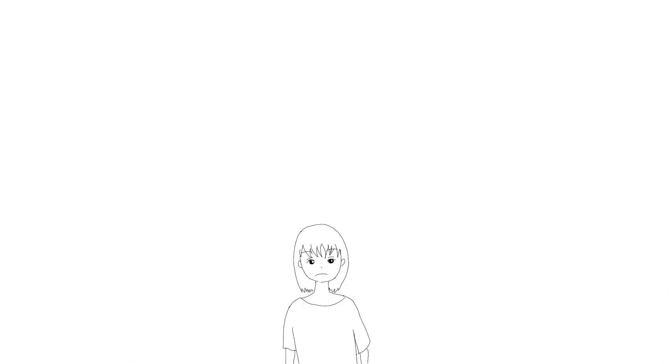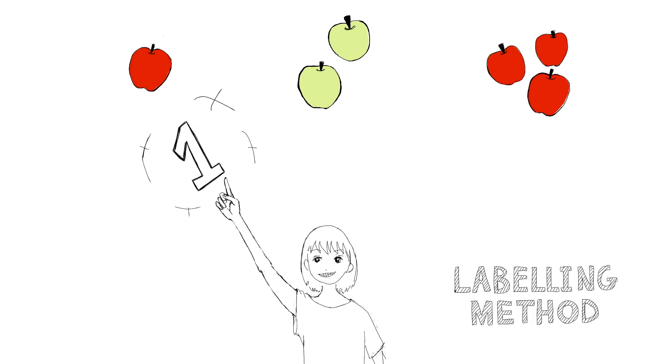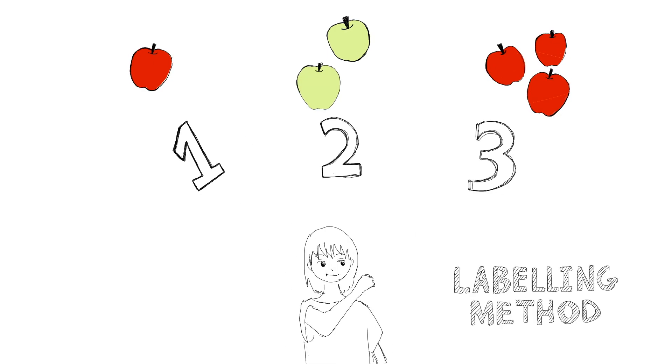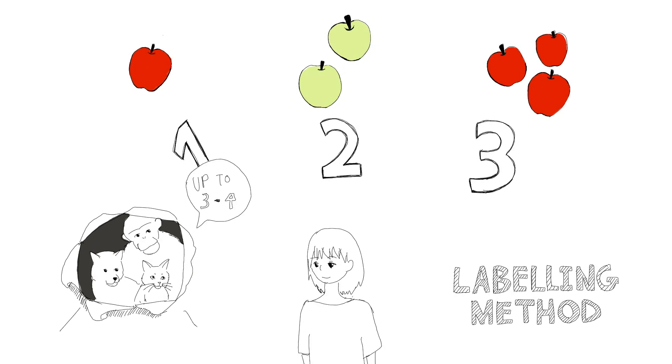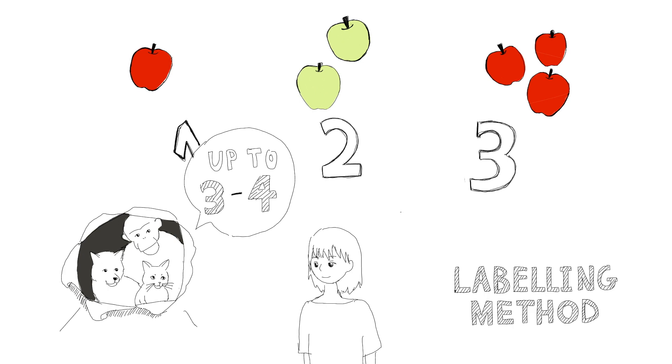We humans often count numbers by labeling each amount using numerals such as 0, 1, 2, and so forth. Some animals are able to learn a similar labeling method, but the extent of this is usually limited to around three or four.